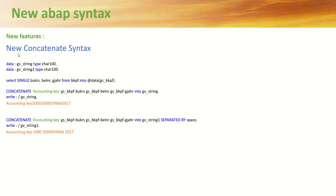How to use concatenate syntax? For the old syntax, after doing some data initialization and if you want to concatenate any variables, we write the concatenate syntax like this: concatenate some text field and then variables into a new variable in which you want to get the concatenated value.